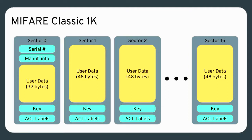A MIFARE Classic 1K card has 16 sectors of 64 bytes each. Sector 0 has the serial number, manufacturing information, and 32 bytes for user data. Sectors 1 and above have 48 bytes for user data. Each sector has two 48-bit keys for access control, with permission bits such as read-only and read-write. There's no such thing as open access, though some use a well-known key.